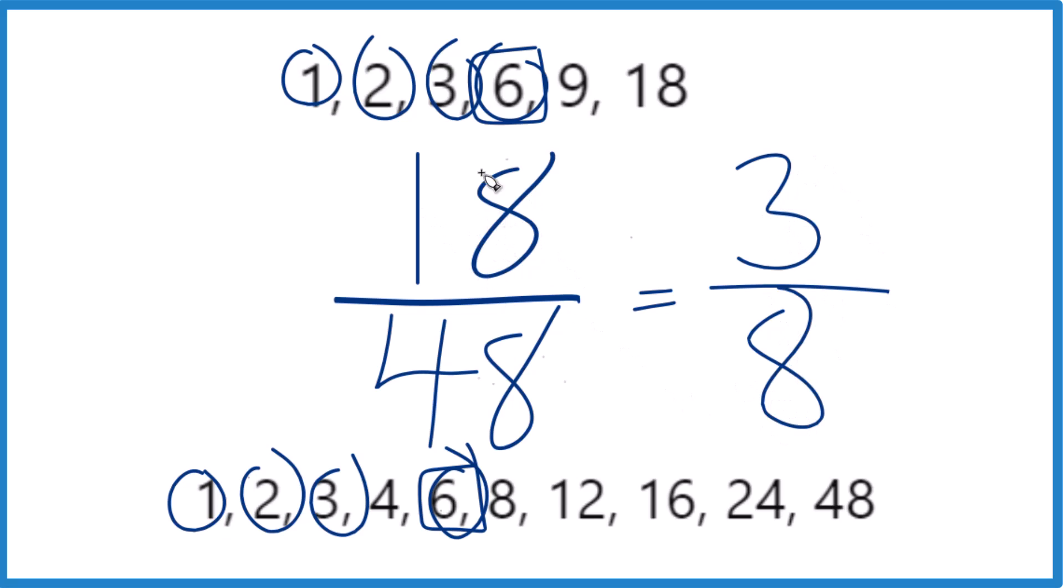So when we simplify the fraction 18/48, we end up with 3/8, and this is in lowest terms. These are equivalent fractions. They have the same value. It's just that 3/8 is the simplified form of 18/48. This is Dr. B. Thanks for watching.